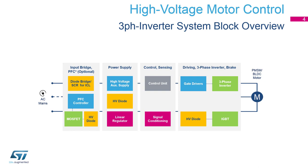In case of power factor correction, a PFC controller with its MOSFET and high voltage diode could be found. In the second section is the power supply: high voltage auxiliary power supply, linear regulator. And in the center we have the control and sensing.